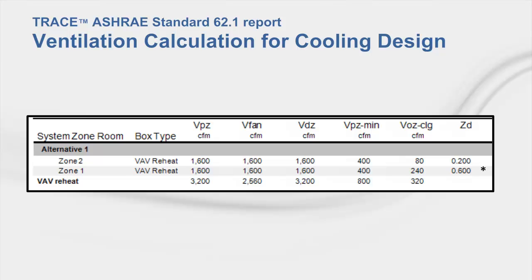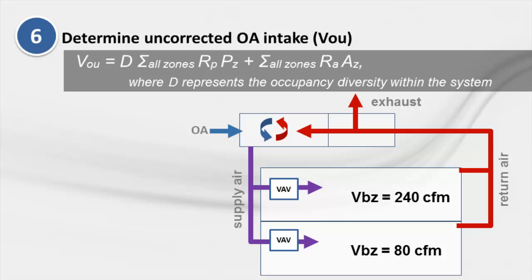In the TRACE report for ventilation calculations for cooling design, TRACE identifies Z sub D for each zone and denotes the critical zone with an asterisk on the right side of the report. In Step 6, we determine the uncorrected outdoor air intake air flow, V sub OU, for the system by totaling the breathing zone outdoor air flow requirements from all spaces served by a common system using equation 6-6.